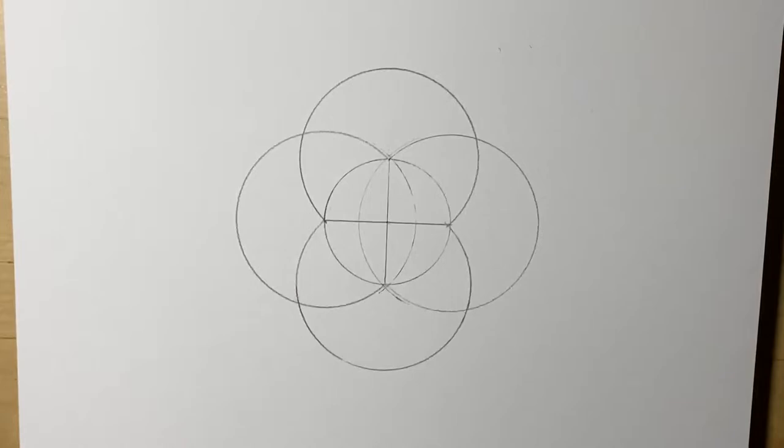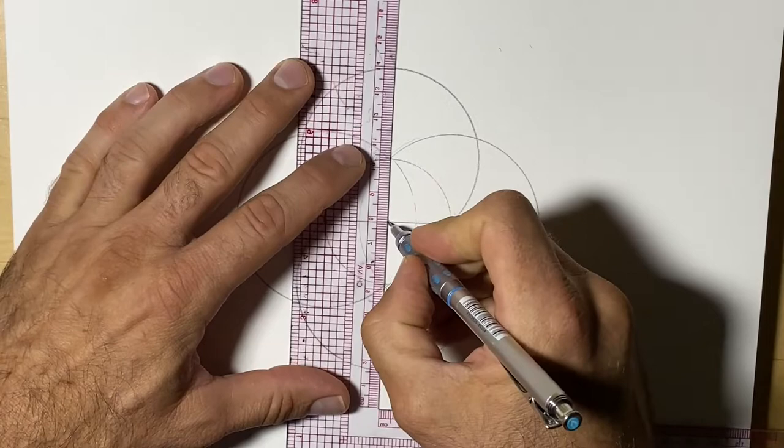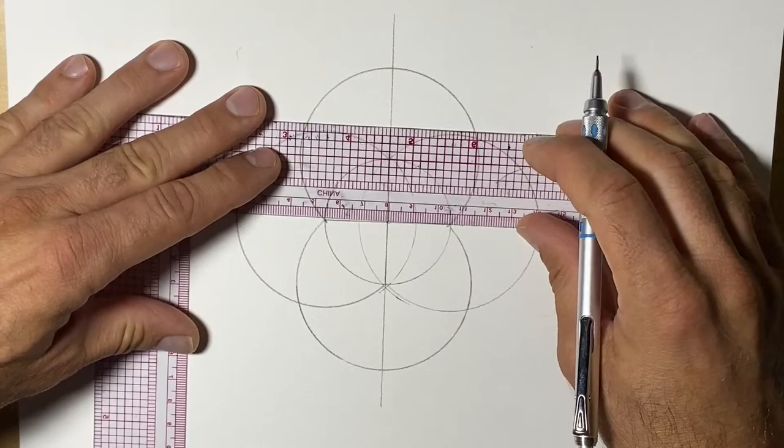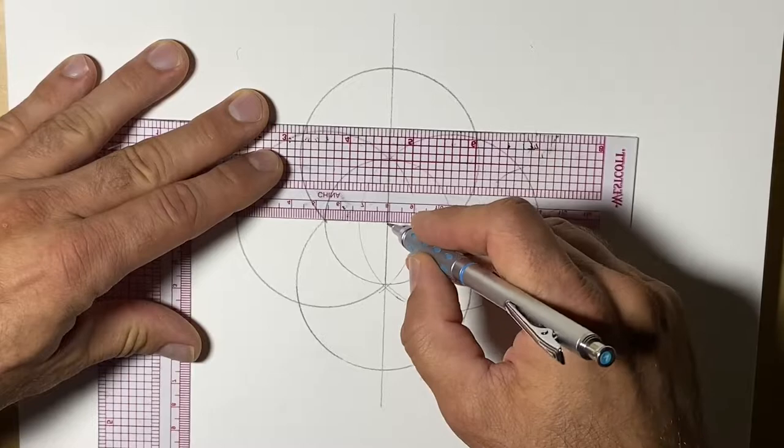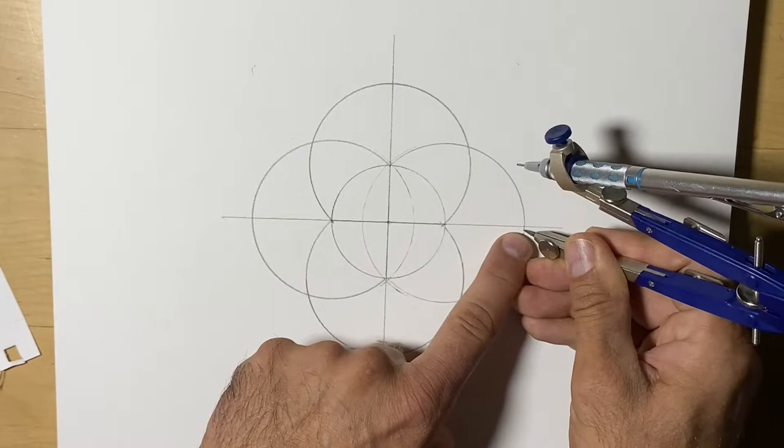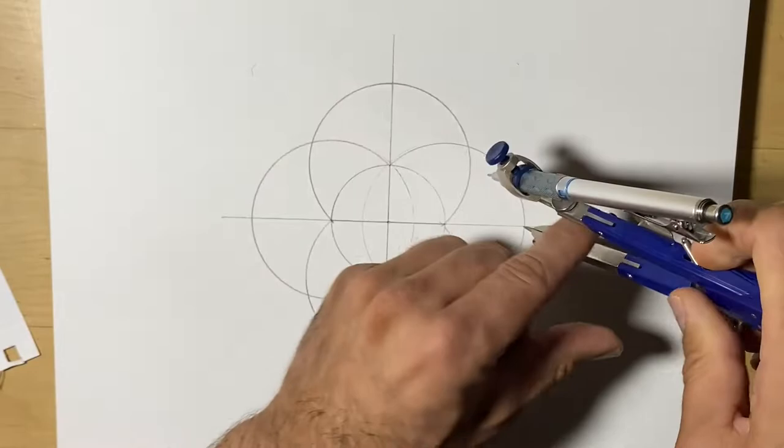Next, we're going to extend the two starting perpendicular lines we drew. I suppose at the beginning we could have just made them larger. And so the next step will be to repeat a similar process. Now we're going to put the compass point where the line crosses the circle once more. And we're going to extend the compass to where the two outer circles intersect.